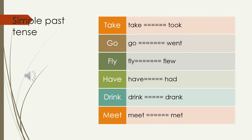Our previous lesson was about the past tense verb. We took some verbs: take/took, go/went, fly/flew, have/had, drink/drank, meet/met. These are the verbs we covered last time - I wrote present first and then past.